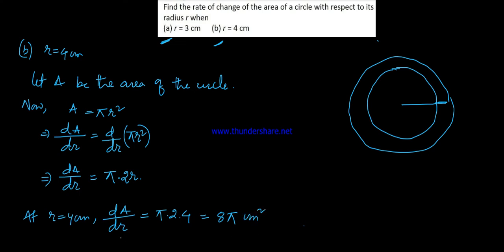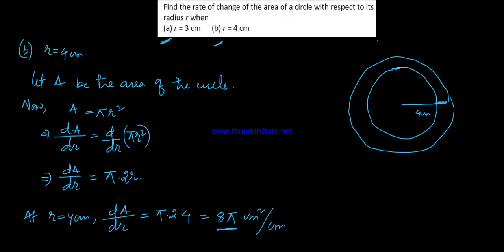The radius is 4 cm. The circle gives 8π per centimeter square. The radius is 1 cm. The area is 8π centimeter square. With radius 4 cm, the area rate of change is 8π centimeter square. See you in the next video.